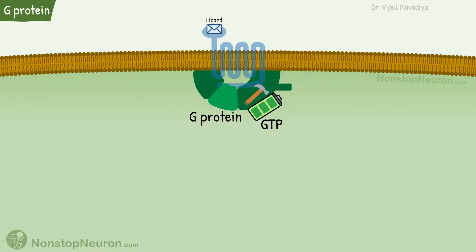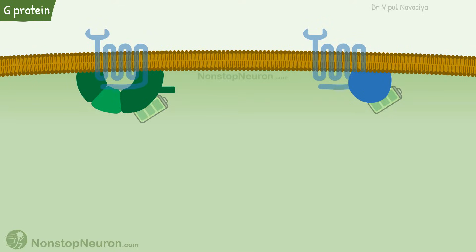The main feature of G-proteins is that they have GTPase activity and they switch between an inactive GDP-bound and an active GTP-bound state. That's why they are called GTP-binding proteins, or G-proteins. Broadly, there are two types of G-proteins: heterotrimeric G-proteins and monomeric, or small, G-proteins.